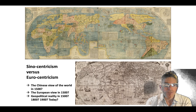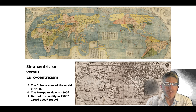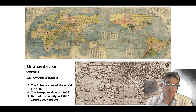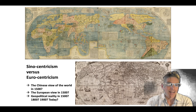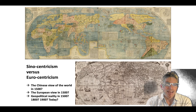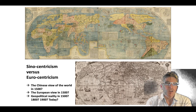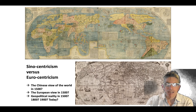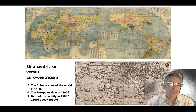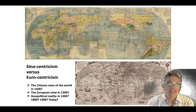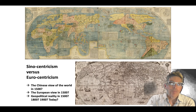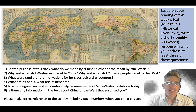The way we look at the world by way of a map has a huge impact on how we think about the world and our own place in it. As you make your way through the Mungelo text, think about what he says about the Chinese view of the world around 1500 during the Ming dynasty. Does he say anything about the European view in 1500? What does he say about the geopolitical reality in 1500, and following on in 1800, 1900, or even today? This idea of Sinocentrism versus Eurocentrism is really at the core of our class, with these shifting paradigms.